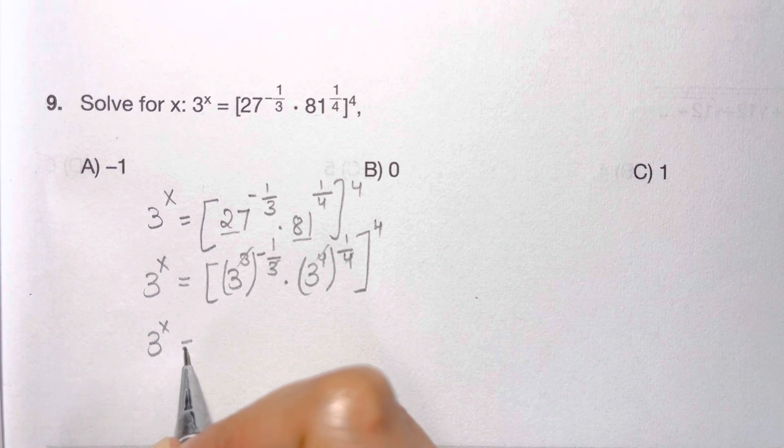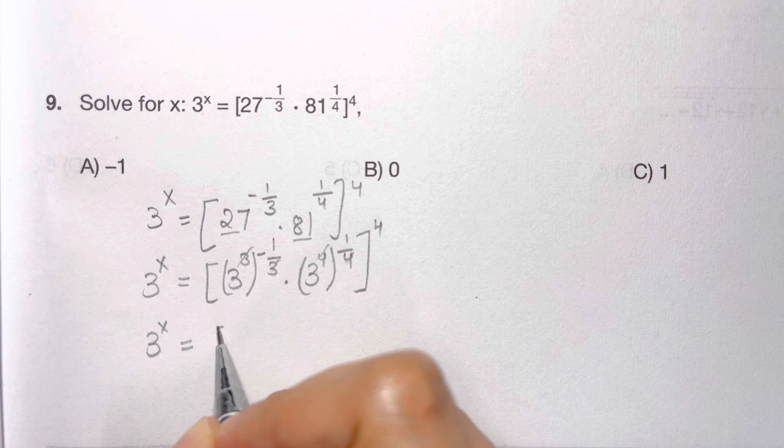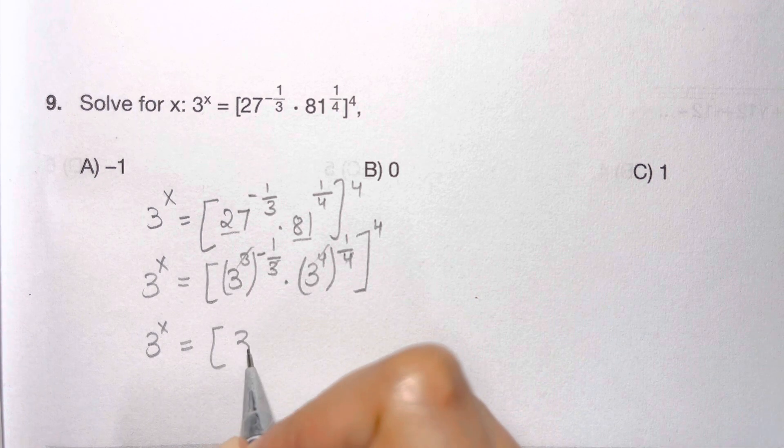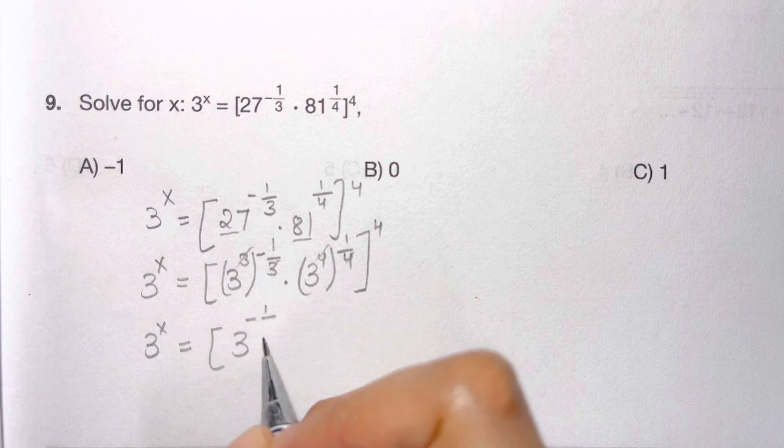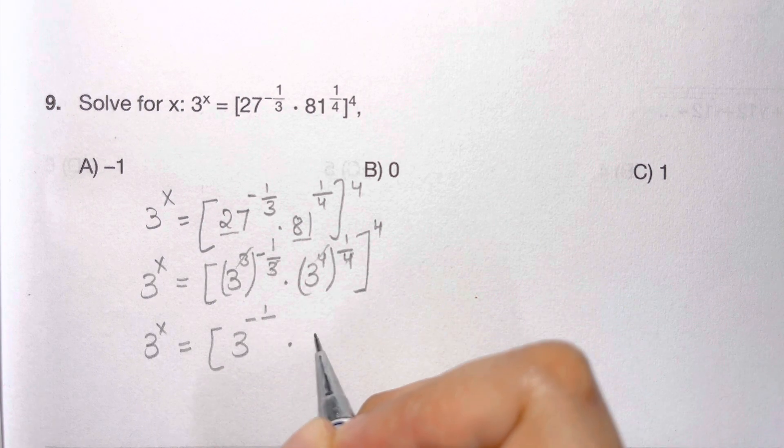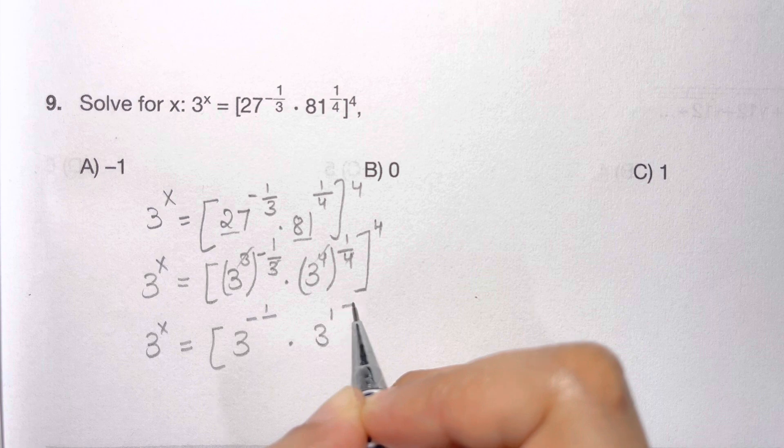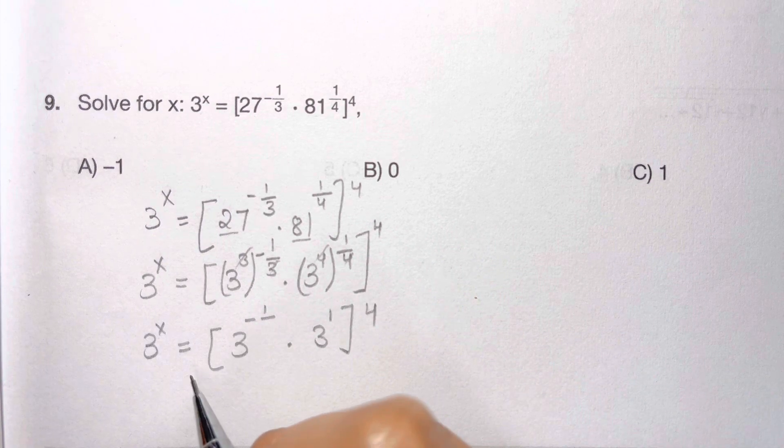What am I left with? 3 raised to x equals 3 to the power of minus 1, because 3 and 3 got cancelled, times 3 to the power of 1, whole to the power of 4. Now that's equal to 3 to the power of minus 1.